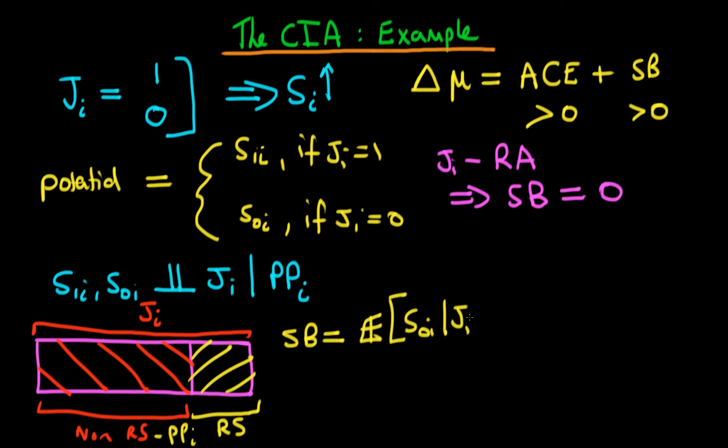And we're taking away from that the expectation of S0i, given that Ji is equal to 0, and given that individual's past level of performance. And now what we do is we actually use our assumption that S1i and S0i are independent of Ji, if we're conditioning on PP.